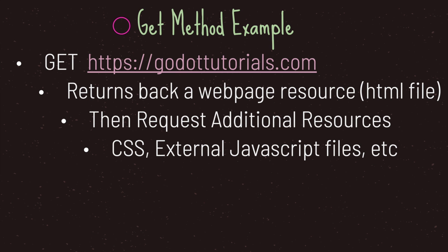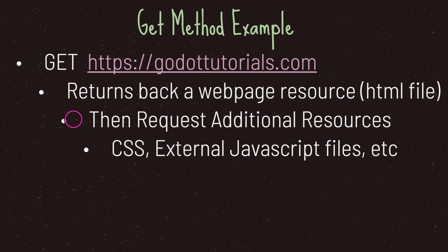The GET method can be used to retrieve a resource. Let's say you want to access a web page. Your method would look something like this — you would have the method type. In this case, we want to use the GET method because we just want to retrieve a web page, and then we follow that with the URL of the web page we wish to retrieve. In this case, we wish to retrieve Godotutorials.com. When we access it, we are returned back a web page resource — in this case, an HTML file. When we receive that HTML file, we then request additional resources if our HTML file needs them, such as external CSS files, external JavaScript files, and so forth.